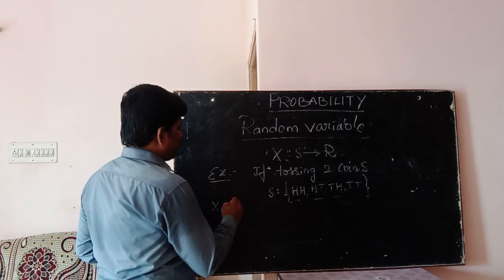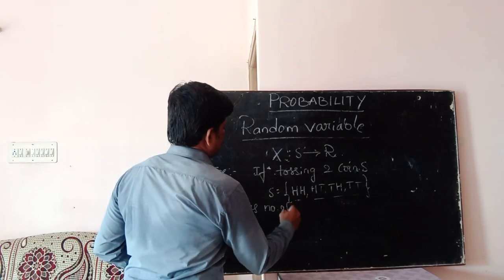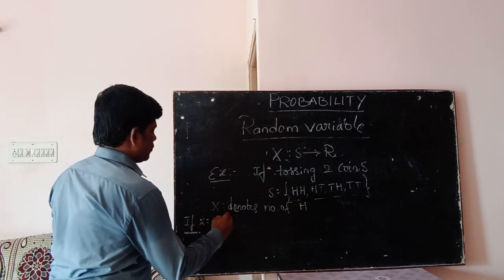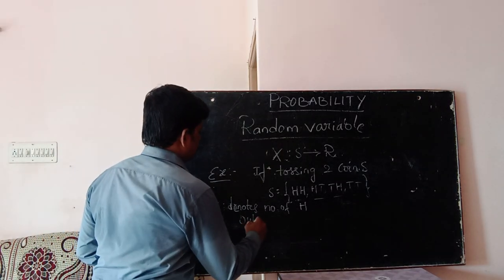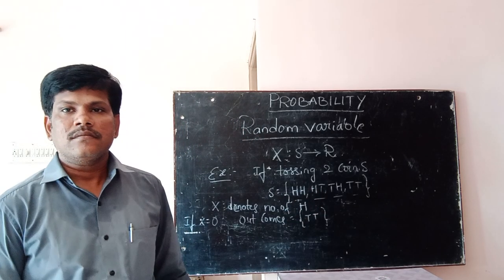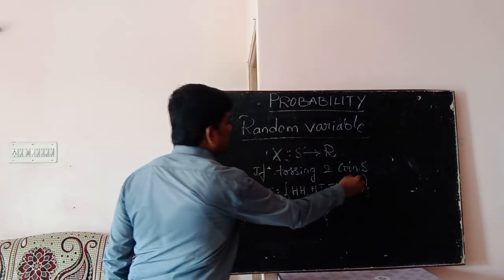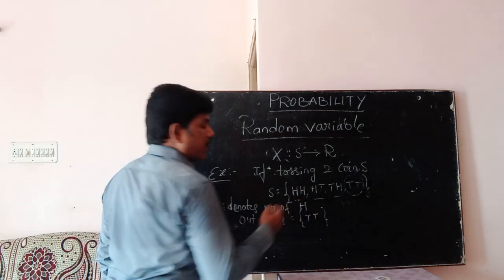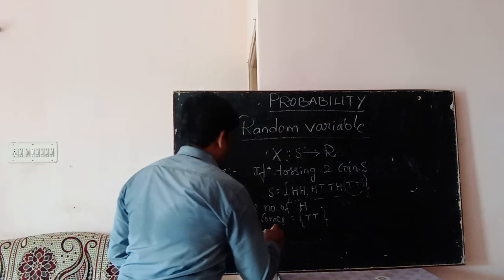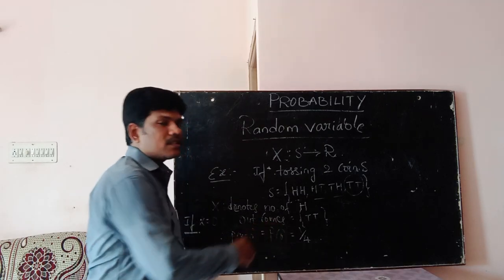Here X denotes the number of heads. If we take X equals zero, that means probability of X equals zero means getting no heads. There is only one possible outcome, which is tail-tail. Therefore, P of X equals zero — the probability of getting no heads — equals one by four.